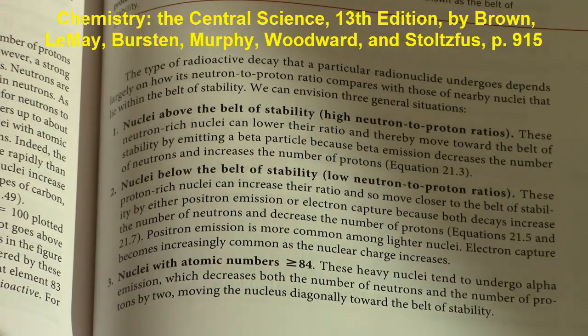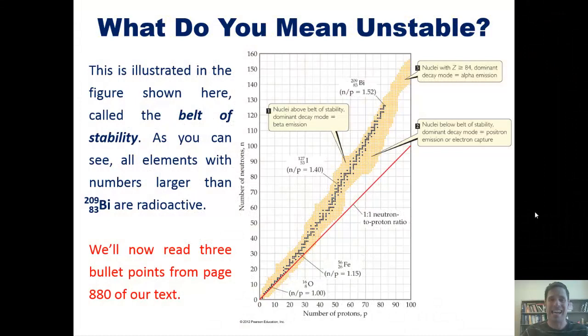The third category are nuclei with atomic numbers greater than or equal to 84. These heavy nuclei tend to undergo alpha emission which decreases both the number of neutrons and the number of protons by two, moving the nucleus diagonally toward the belt of stability.